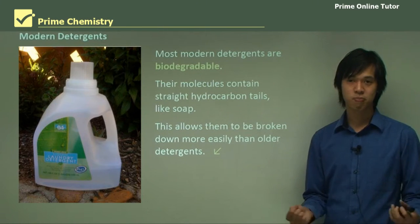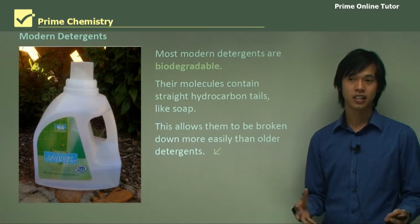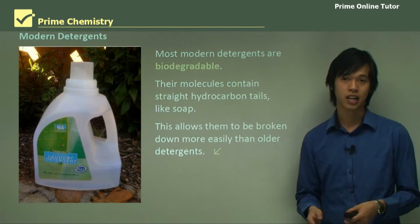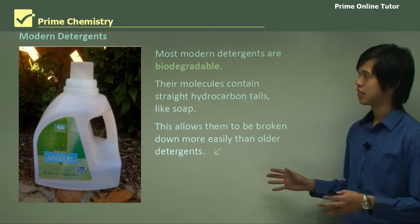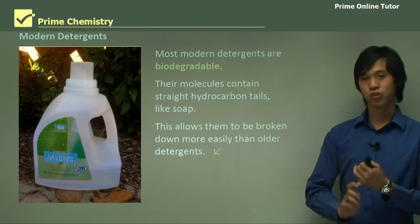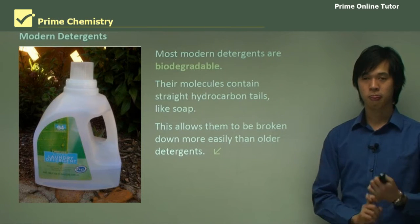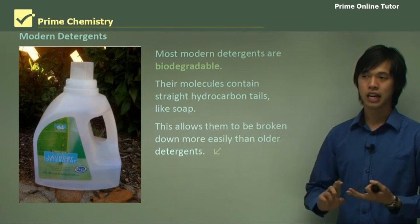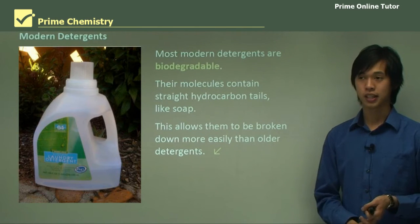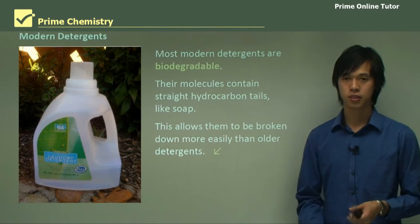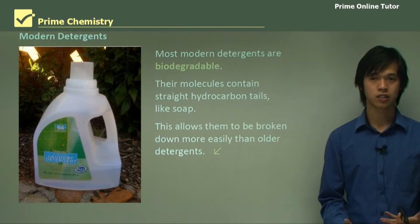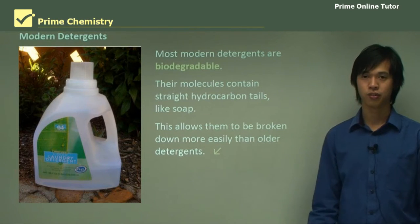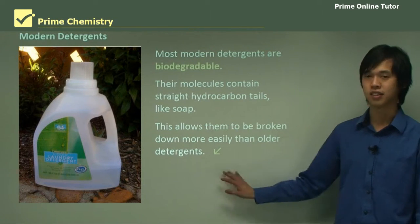So that's basically the entire major environmental concerns regarding soaps. Eutrophication from phosphate builders is one major issue, and biodegradability is the other major issue. We'll now move on to the question segment and develop some answers around these concepts.